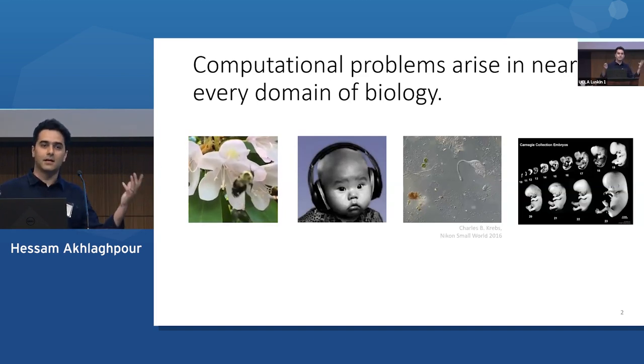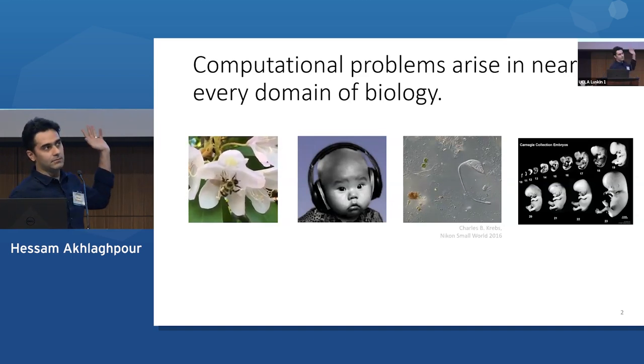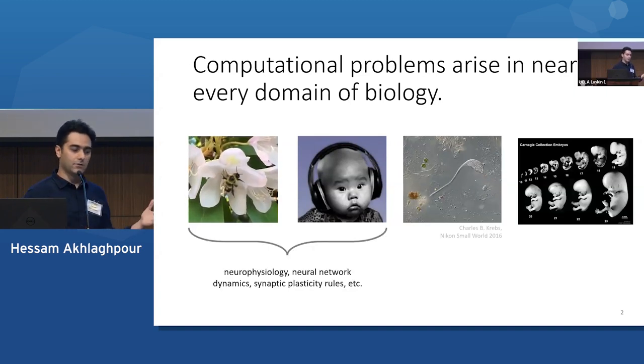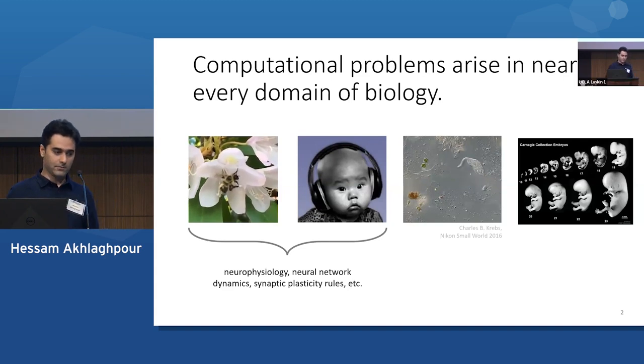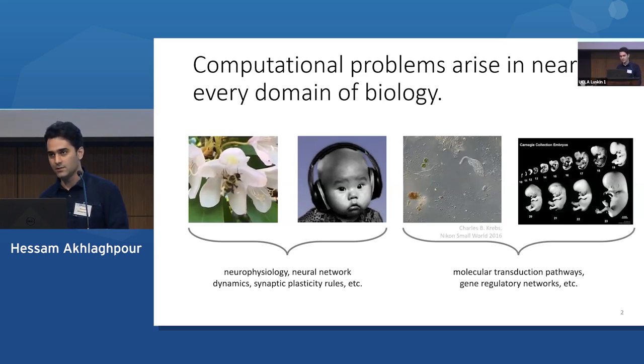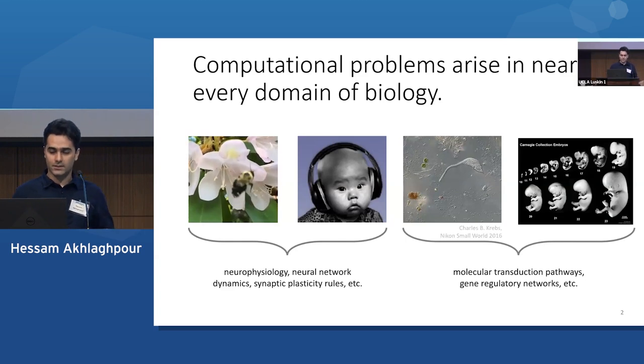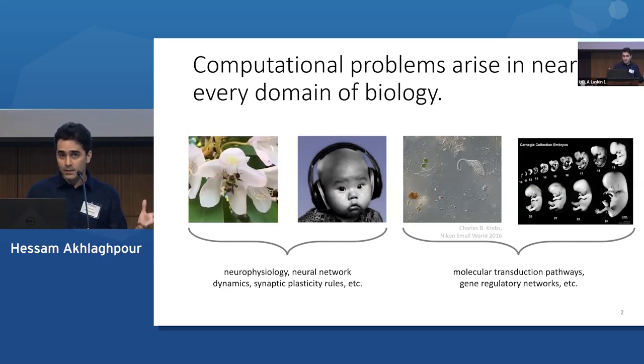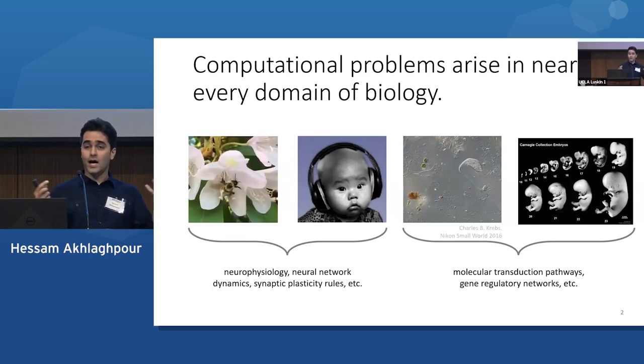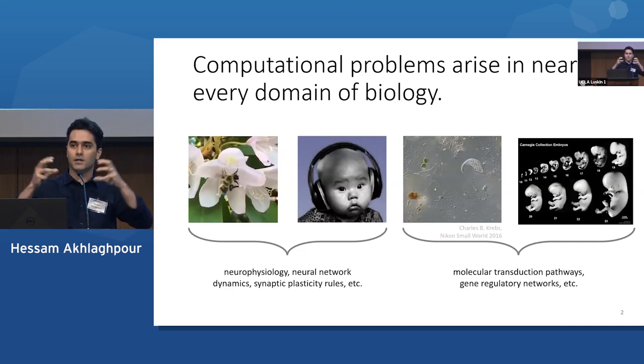So what mediates these kinds of computations? We think that in the cases of cognition, learning, and behavior, it's done through things like neurophysiology, neural network dynamics, plasticity rules, et cetera. And for the domains of single-cell behavior and development, we think it's done through molecular transduction pathways, gene regulatory networks, and more recently we've learned non-neuronal electric signaling. But the widely held assumption is that these are the main building blocks of computation, and that organisms accomplish these highly complex transformations of information by putting together these building blocks in the right way.